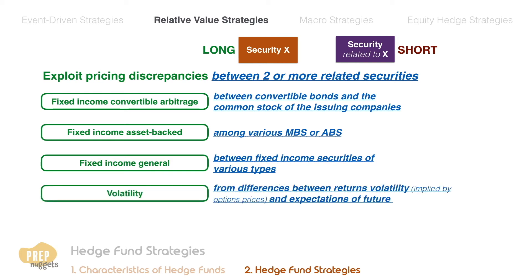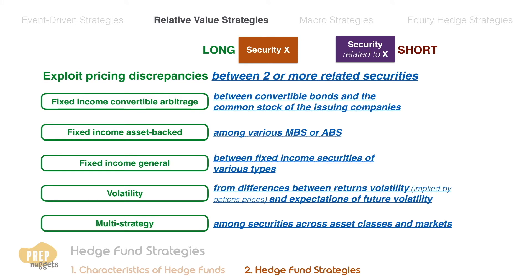Volatility is to exploit pricing discrepancies arising from differences between returns volatility implied by options prices and manager expectations of future volatility. And multi-strategy is to exploit pricing discrepancies among securities across asset classes and markets, other than those already mentioned. This strategy is not of any particular style, but simply looks for exploitation opportunities wherever they might exist.